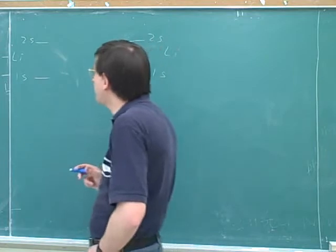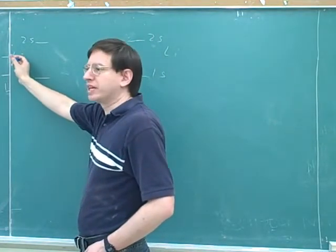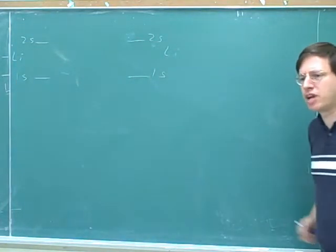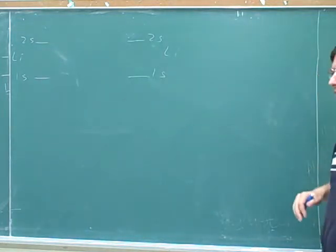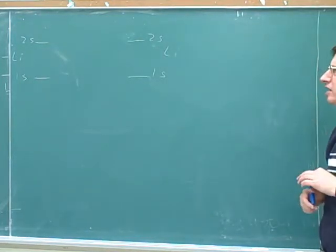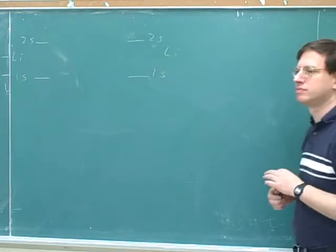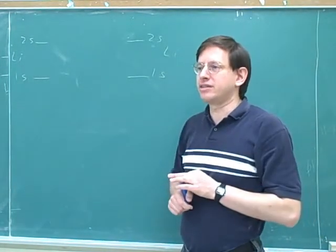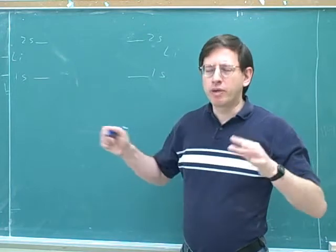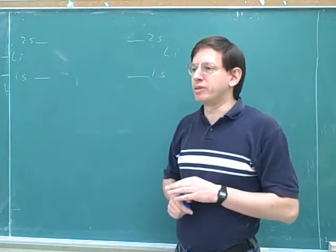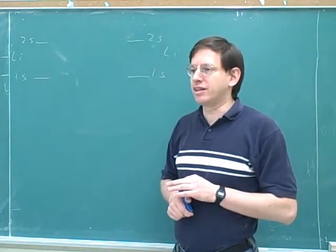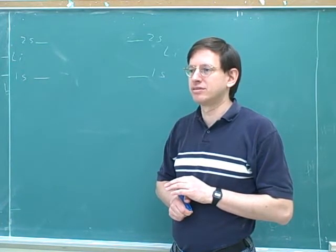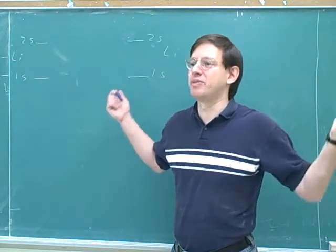Now we need to figure out how many electrons lithium will be contributing to the molecule. How many electrons will the lithium be contributing — how can we figure that out? One, because it's in row one — that tells us how many valence electrons it's contributing. But the way we're doing this now, we need the total number of electrons that lithium is contributing. Is it three? Because it has an atomic number of three.